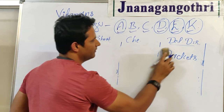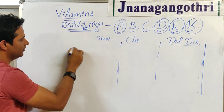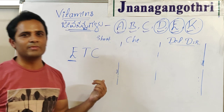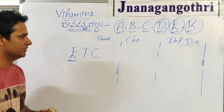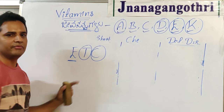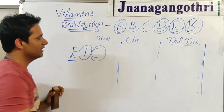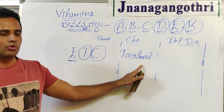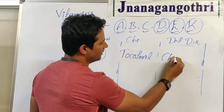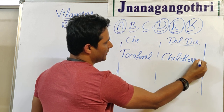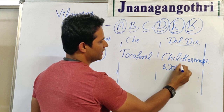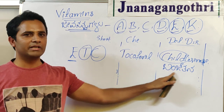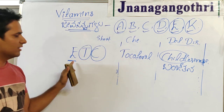For vitamin E, remember: E, T, C (et cetera — a very common phrase). T gives the chemical name Tocopherol. C gives the deficiency disorder: Childlessness (sterility/infertility — called Banjatana in Kannada). So: E → etc → Tocopherol and Childlessness (sterility).